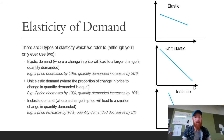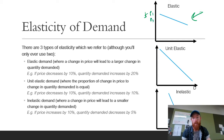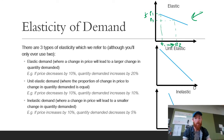Looking at elastic demand — it's basically the flatter curve, where a small change in price leads to a relatively larger change in quantity demanded. So if we have P1 and P2 and dot them out, you can see that a small change in price has led to a relatively larger change in quantity demanded. Where a change in price will lead to a larger change in quantity demanded — for example, if price decreases by 10%, quantity demanded might increase by 20%.